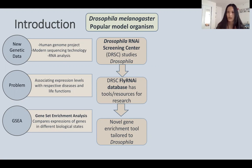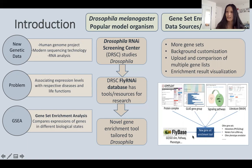The Drosophila RNAi Screening Center, otherwise known as the DRSC, was founded to study Drosophila specifically. The DRSC tracks RNAi screening reagents and results for Drosophila, and has a database called the FlyRNAi Database with a variety of tools and resources. The FlyRNAi database is currently developing a novel gene set enrichment tool tailored to Drosophila that will pull data from multiple sources, generating a final outcome more efficient and capable than any others of its kind.